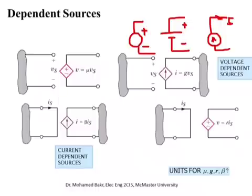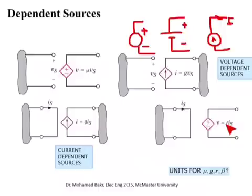To summarize the units: mu is dimensionless (voltage over voltage); g has units of ampere per volt, or siemens (current over voltage); beta is dimensionless (current over current); and r has units of volts per ampere, which we call ohms. This ratio of voltage to current is what we call ohmic resistance.